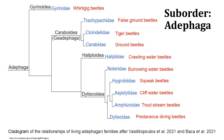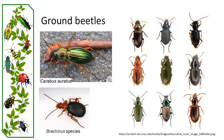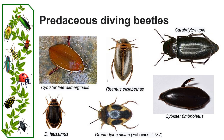Suborder Adephaga is one of the largest and most diverse groups of beetles. It includes predatory beetles like the ground beetles and diving beetles. Ground beetles are found in various terrestrial habitats, from forests to grasslands, and play a crucial role in regulating insect populations. Diving beetles, as their name suggests, are aquatic and often found in ponds, lakes and streams, where they hunt for small aquatic organisms.